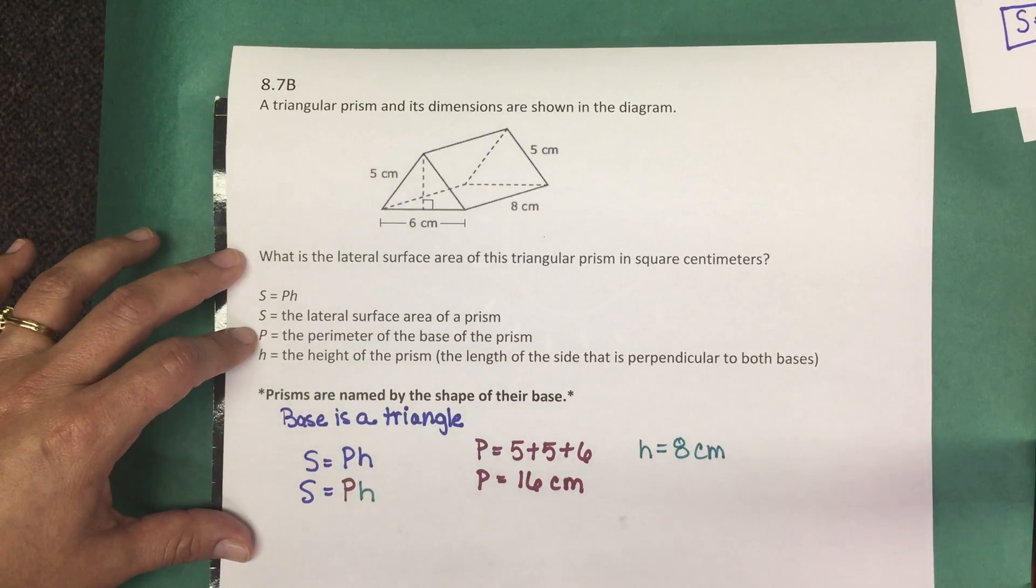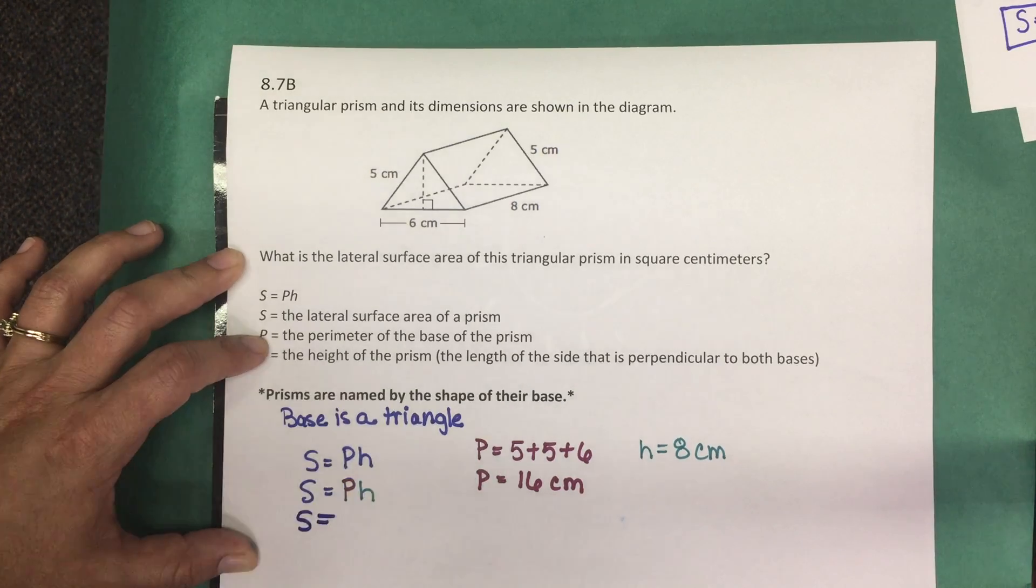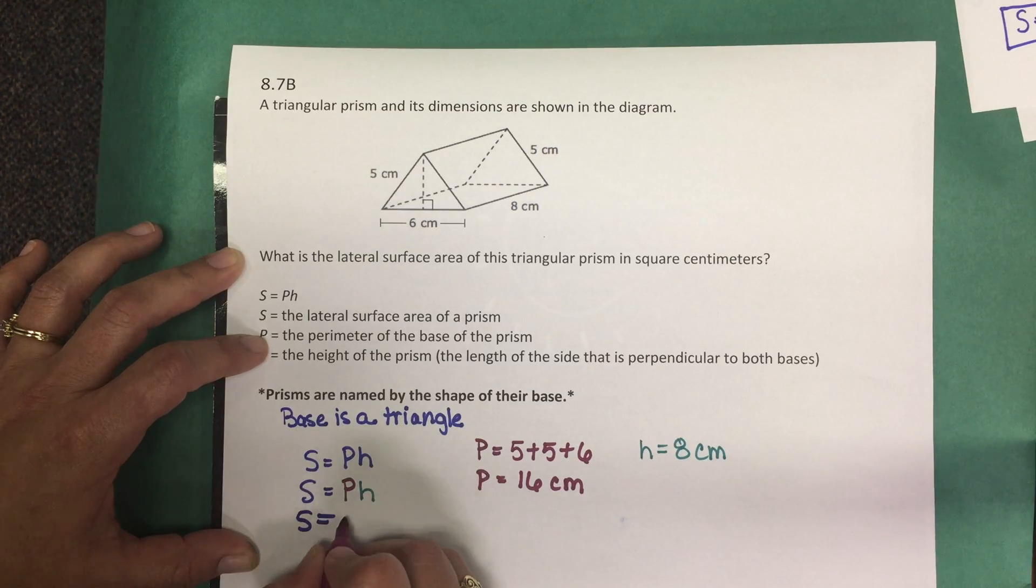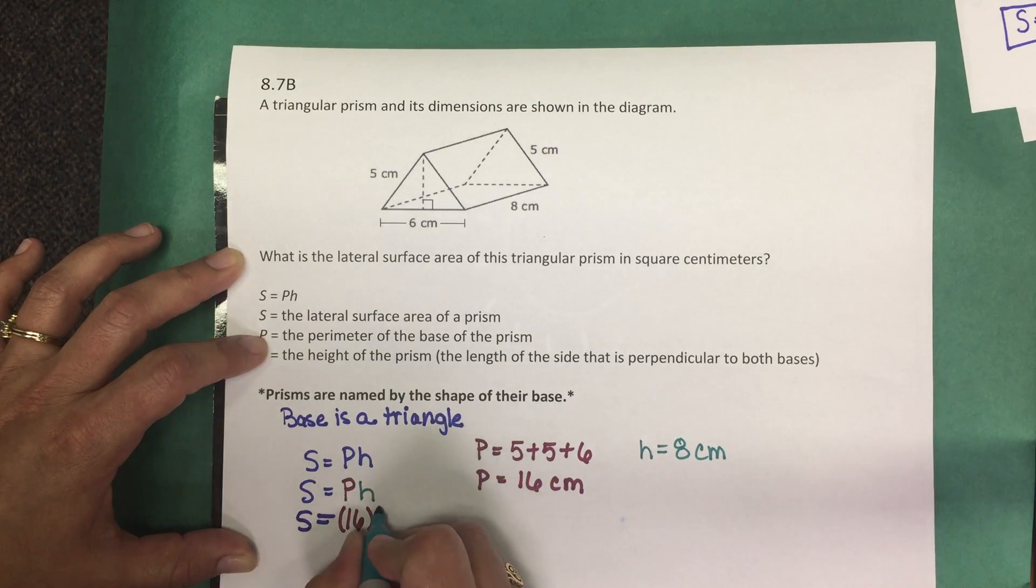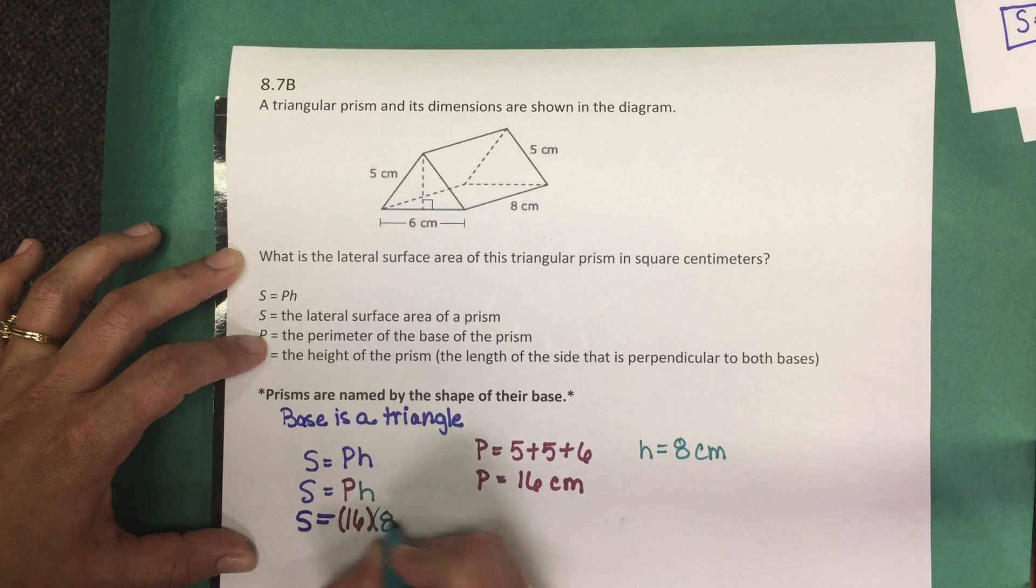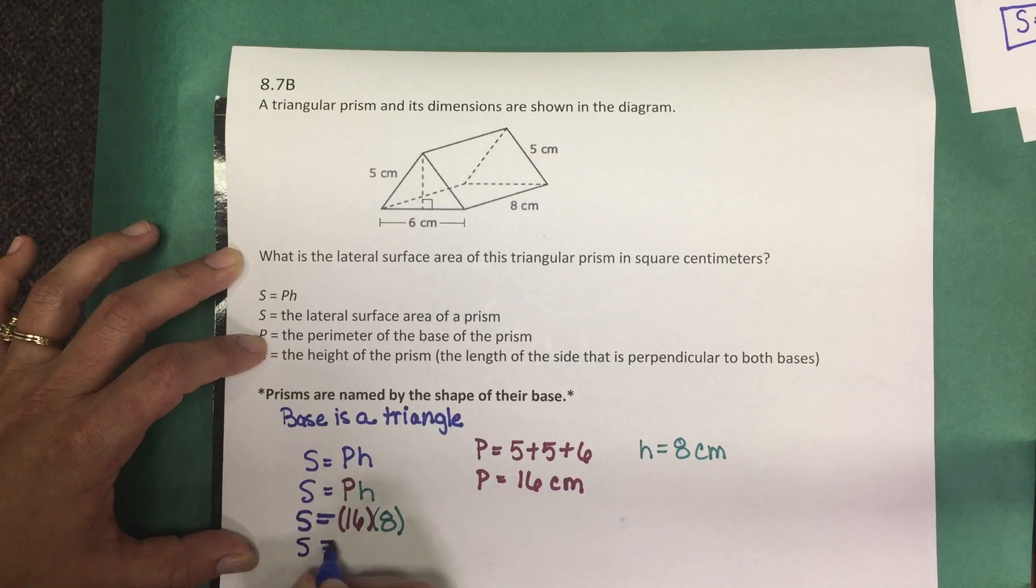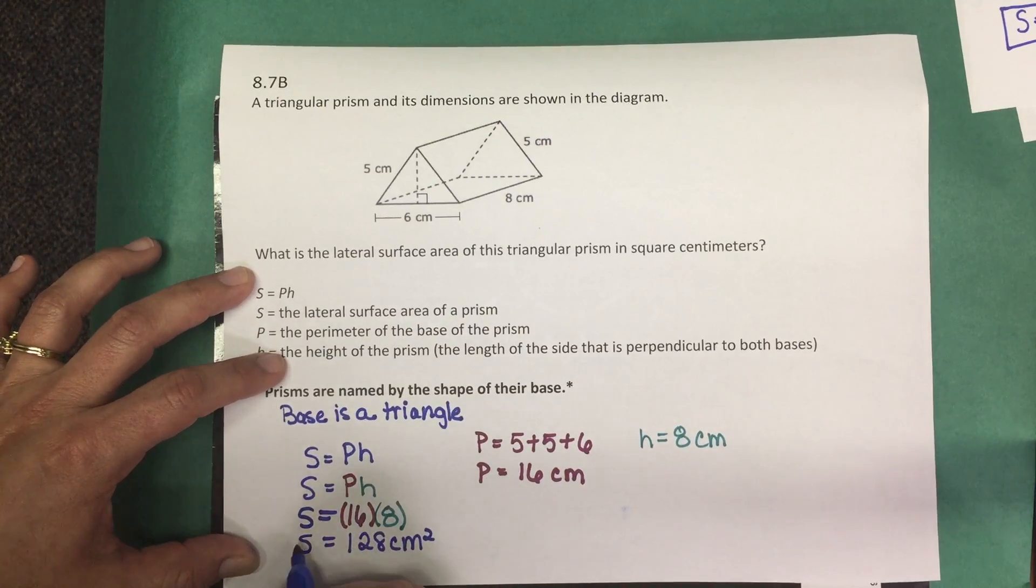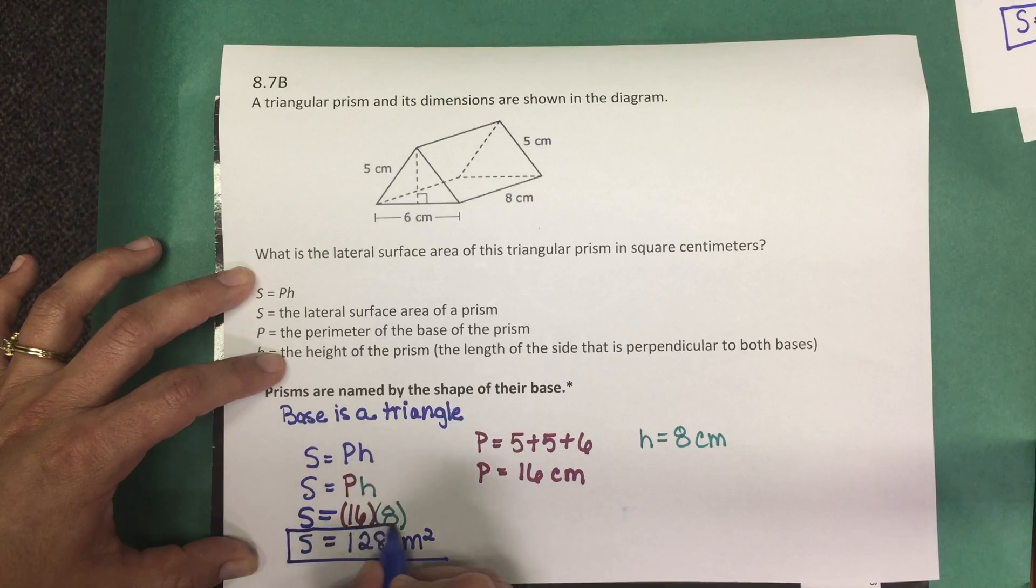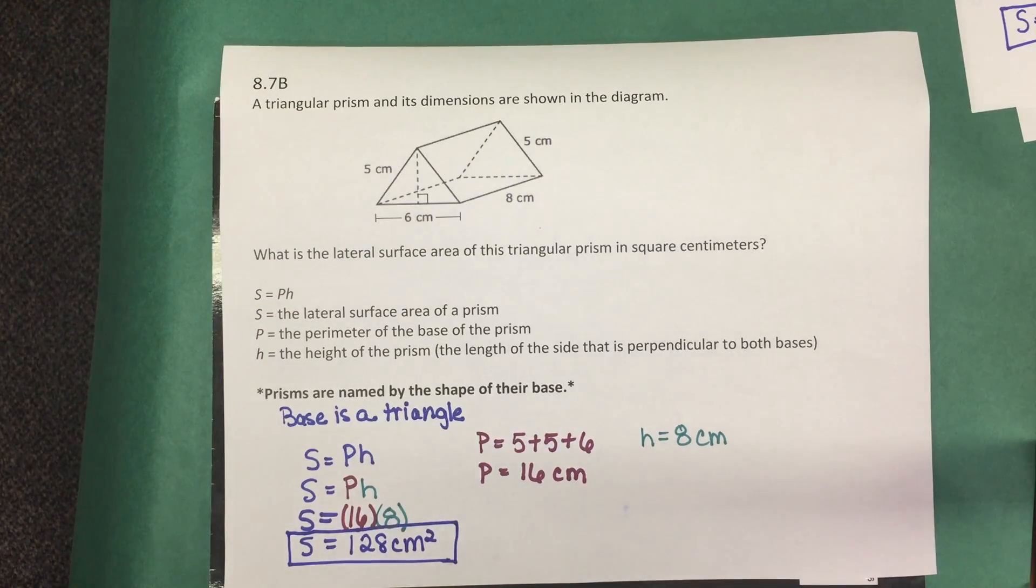Now we're going to take those values and substitute into the formula. So the lateral surface area is the perimeter of the base, which we determined to be 16 centimeters, times the height of the prism, which is 8 centimeters. We just multiply 16 times 8, which is 128 centimeters squared. So the lateral surface area for this triangular prism is 128 centimeters squared.